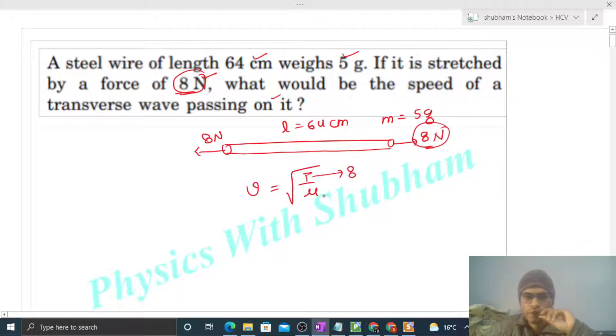So tension will be 8 Newton and mu is nothing but mass per unit length. So mass is 5 times 10 to the power minus 3 kilogram divided by length, so this will be 64 times 10 to the power minus 2 meter.